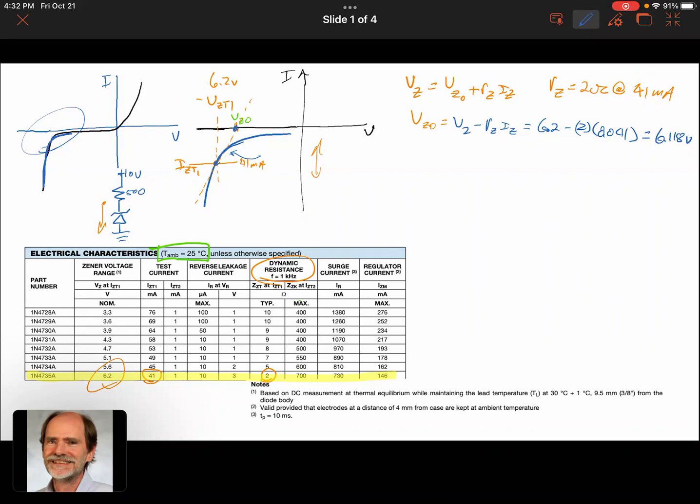And I should point out that the slope of this line is 1 over Rz. And for this particular diode, that would be 1 over 2 for this one at 41 milliamps. That's the tangent place.